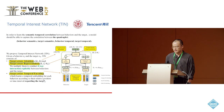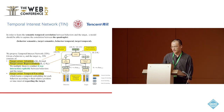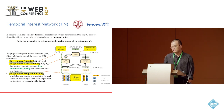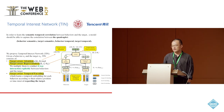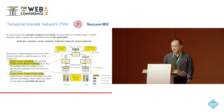The first component is target-aware temporal encoding, which learns a temporal embedding for each behavior according to their relative position or time interval regarding the target. The second is target-aware attention, which assigns an attention weight for each behavior based on the dot product of the behavior and target embedding. The third is target-aware representation, which is an element-wise multiplication of the behavior and target embedding. We multiply the output of the target-aware attention and the target-aware representation to conduct the four-way interaction explicitly between behaviors and the targets.